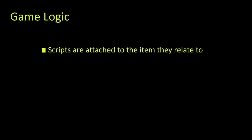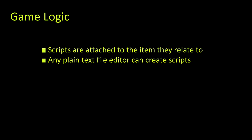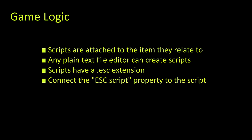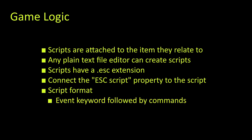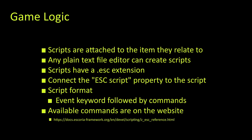Escoria scripts define the game logic for your game and are attached to the item they relate to. You can use any text editor to create the scripts as long as they produce plain text files with a .esc extension. When you select nodes like ESC items or ESC rooms, these nodes will have an ESC script property to link them to their script. Escoria scripts follow the basic format of an event keyword followed by a set of commands. The sample interface plugins like Simple Mouse implement the different interactions — example interaction types are walk, look, pick up, use, and talk. The list of available commands can be found on the Escoria website in the ESC language command reference.